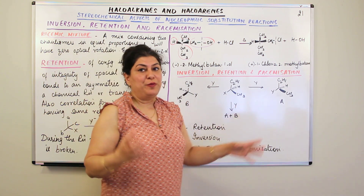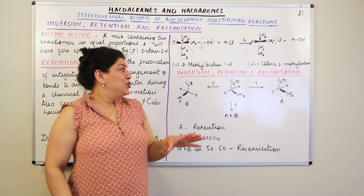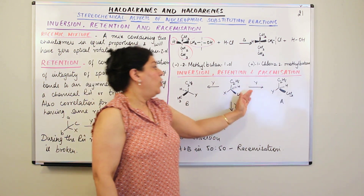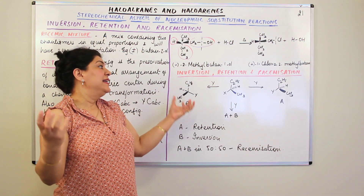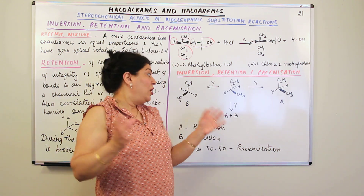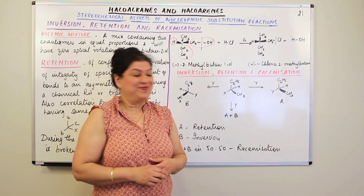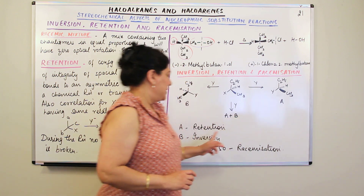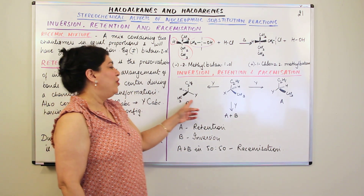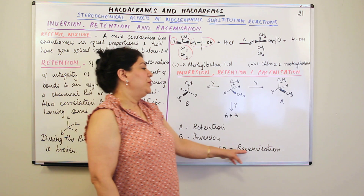If I take a 50% mixture of both compounds A and B, which are enantiomers, I would get a racemic mixture. This process of obtaining a racemic mixture — by getting both enantiomers in equal quantity, a 50:50 ratio — is known as racemization. So A is formed by retention, B is formed by inversion, and A plus B in a 50:50 ratio gives the racemic mixture through racemization.